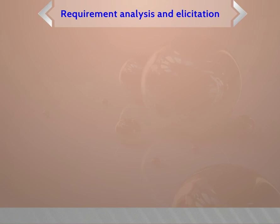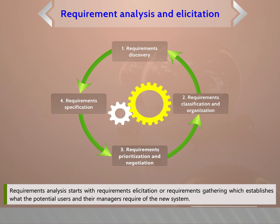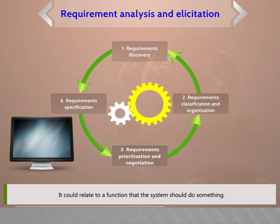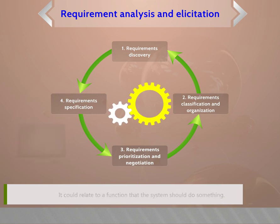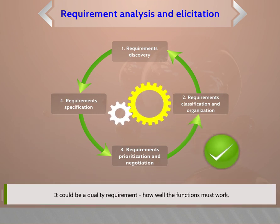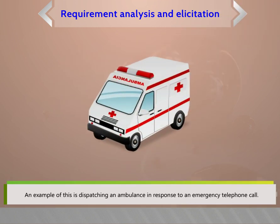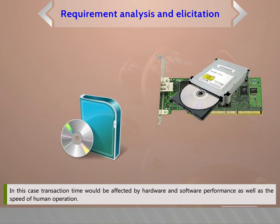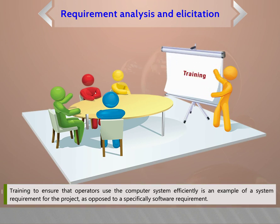Requirement analysis starts with requirements solicitation or requirements gathering, which establishes what the potential users and their managers require of the new system. It could relate to a function that the system should perform or a quality requirement — how well the functions must work. An example is dispatching an ambulance in response to an emergency call, where transaction time is affected by hardware, software performance, and the speed of human operation.